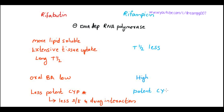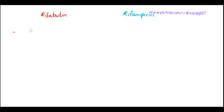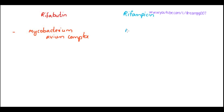Whereas rifampicin is a potent CYP inducer. The spectrum of action of rifabutin is mainly against Mycobacterium avium complex, whereas rifampicin acts mainly against Mycobacterium tuberculosis.